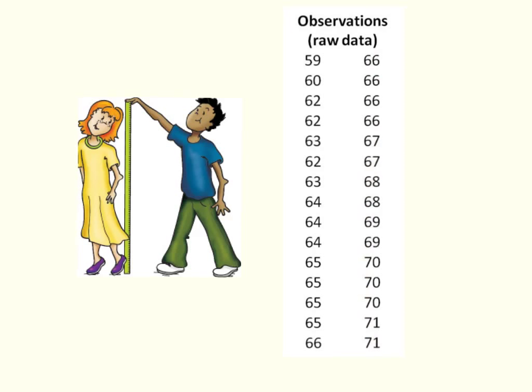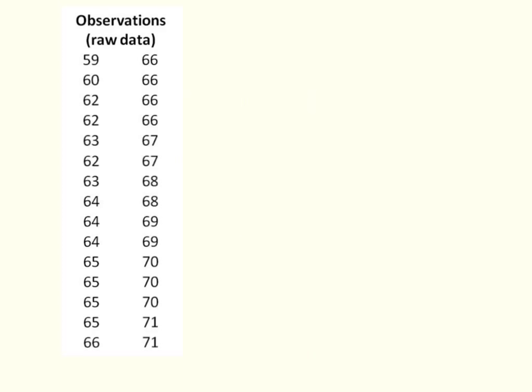We can make a frequency distribution, which is one really useful way of looking at data. A frequency distribution shows the data in a different format. Here are all of our raw data, the 30 individual observations. To create a frequency distribution, we're going to list all of the values within the range of heights that are represented by our data.